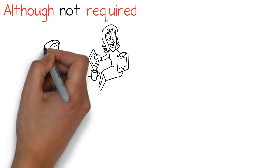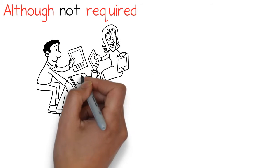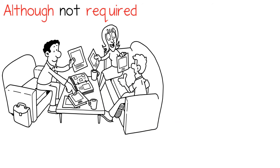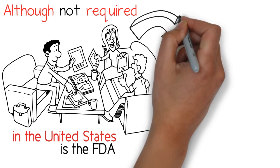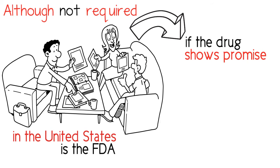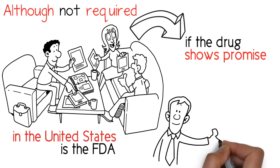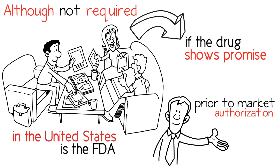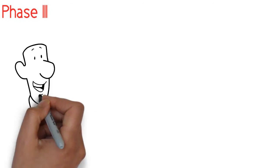Although not required, at the end of phase 2 the pharmaceutical or biotechnology company will meet with a regulatory body, which in the United States is the FDA. They discuss the phase 2 findings, any concerns about the data, and if the drug shows promise, the design and scale of protocols for phase 3, the last phase prior to market authorization.